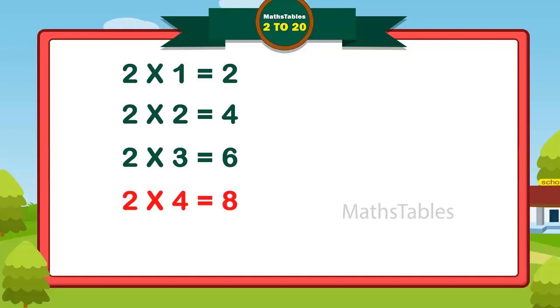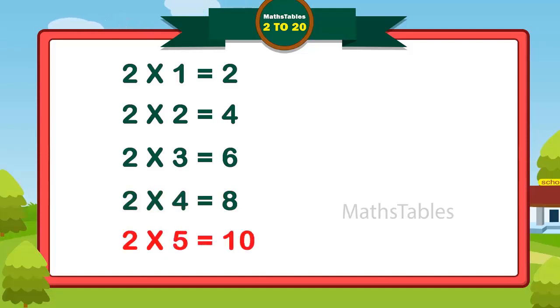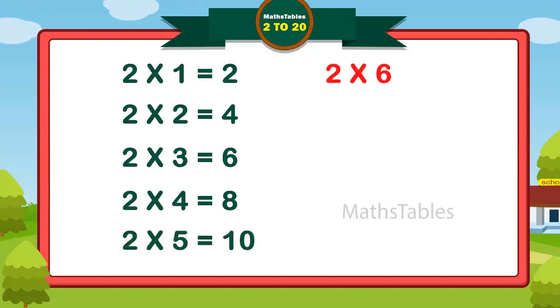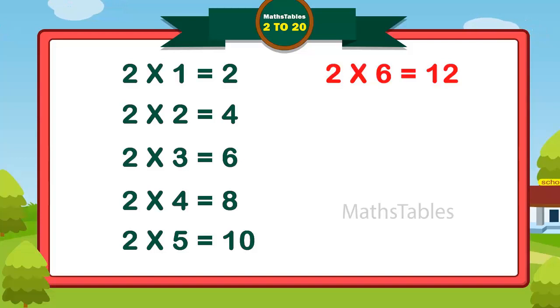Two fives are ten. Two fives are ten. Two sixes are twelve.